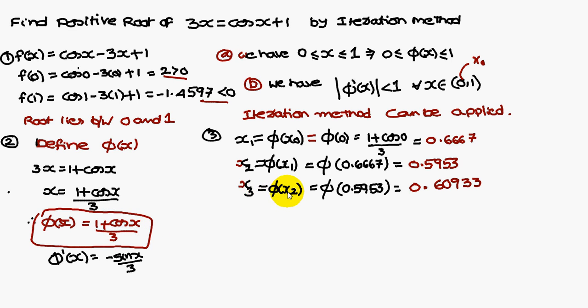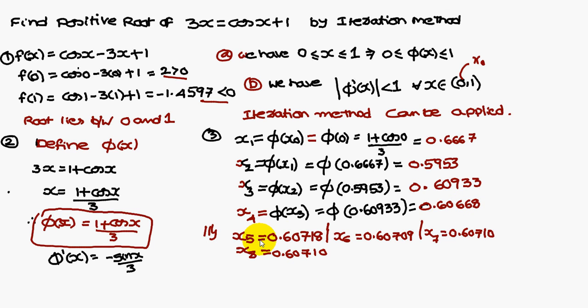Similarly, x3 equals phi of x2, where x2 is 0.5953, giving 0.60933. x4 is phi of x3 where x3 is 0.60933, giving 0.60668. Similarly, x5 is 0.60718, x6 is 0.60709, x7 is 0.60710, x8 is 0.60710.